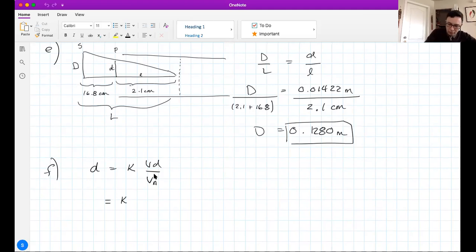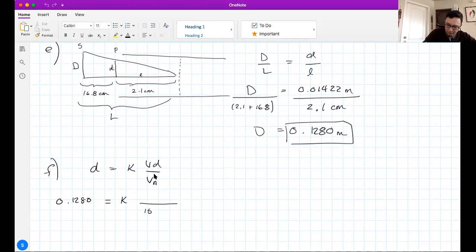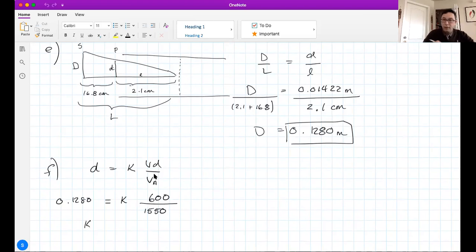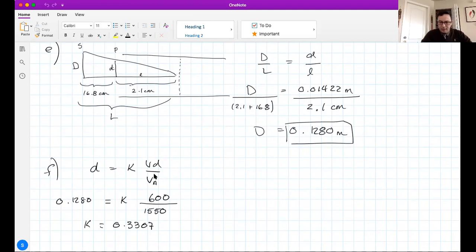Here's what I know. The deflection was 0.1288 when the accelerating voltage was 1550 and the deflecting voltage was 600. Solve for K. Run K. I got 0.3307. It doesn't have units or anything like that. It's just a value. That CRT will always have that K value. It won't change.